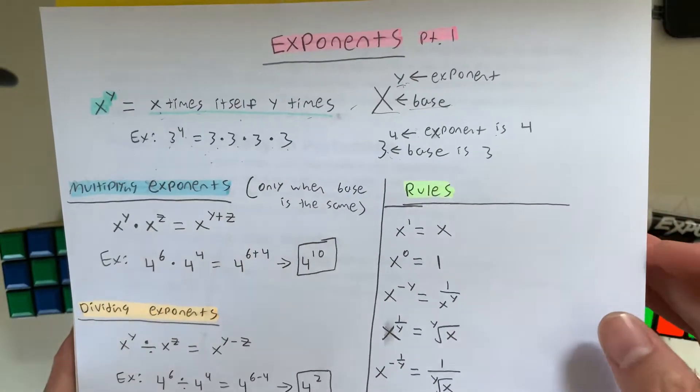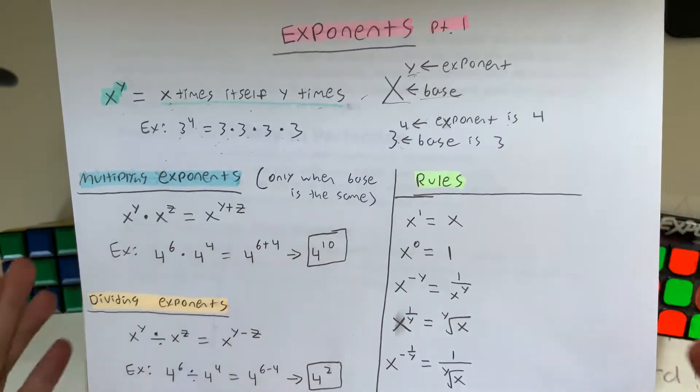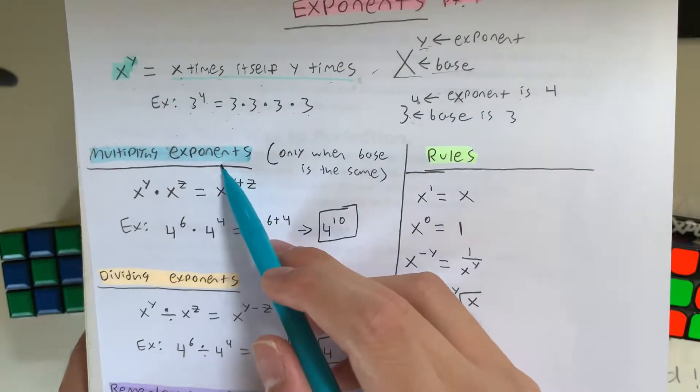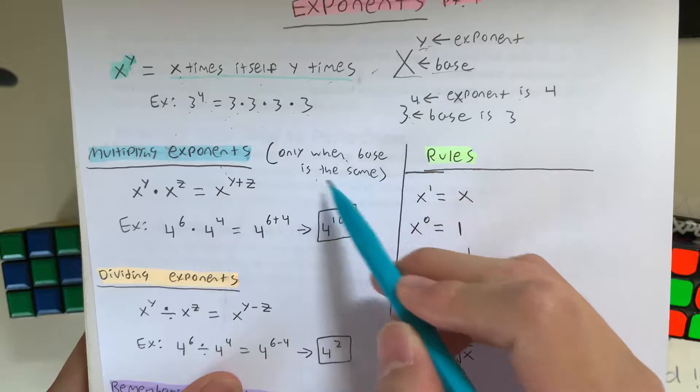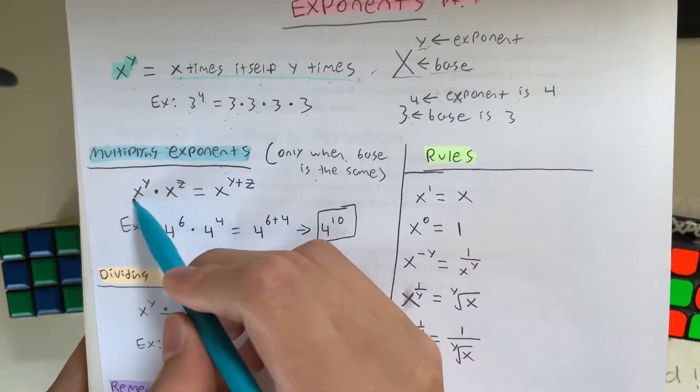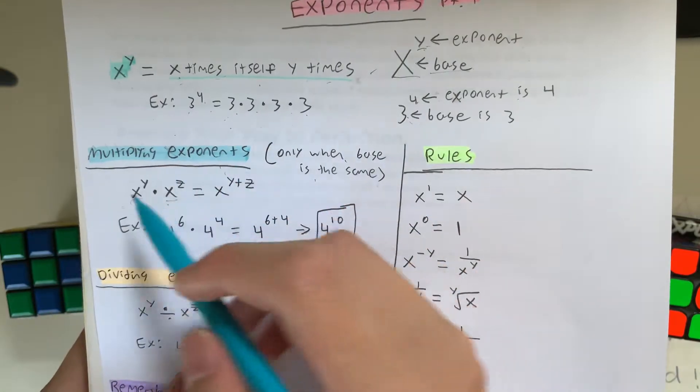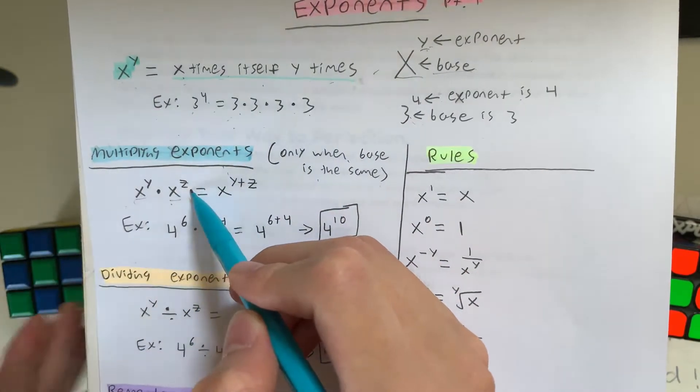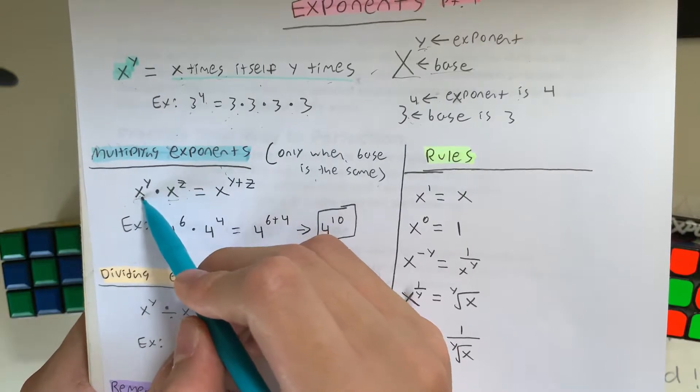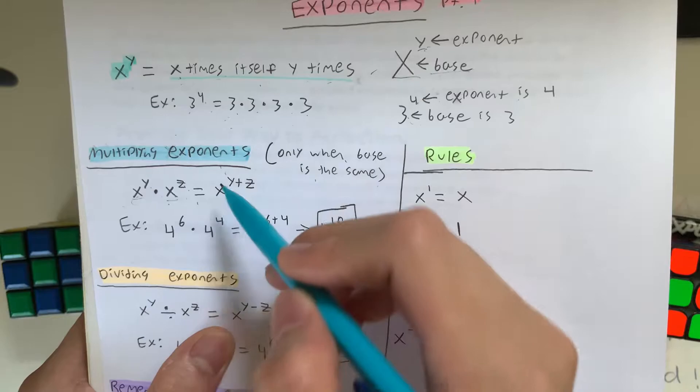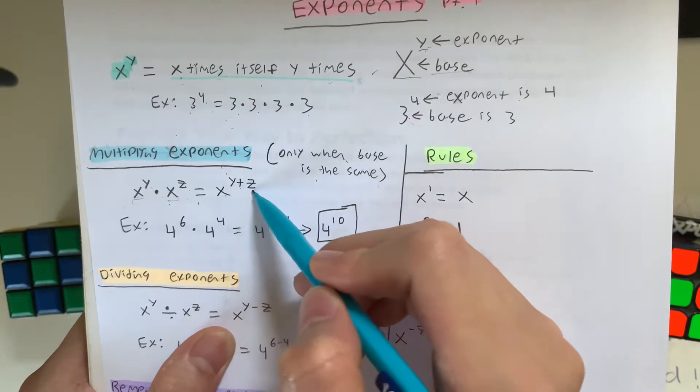So there are many things that concern exponents, such as multiplying exponents. When you multiply exponents, you have to make sure that the base is always the same. So in this case, x is the base, and x is equal to x, so it's the same. So when you multiply exponents, you add the exponents. So x to the y times x to the z is equal to x to the y plus z.